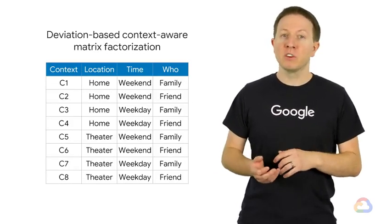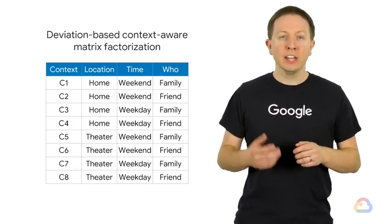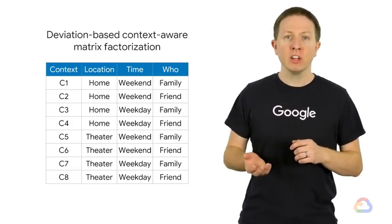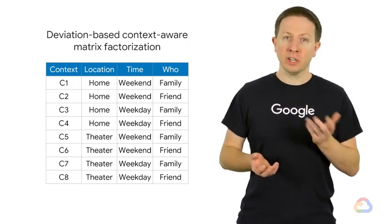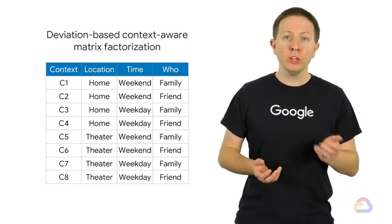Here's an example of some of our contextual data for movies. Here we have essentially grouped by all of the unique contexts, which in this example we have eight of, with three dimensions each: location, time, and who the user watched the movie with.